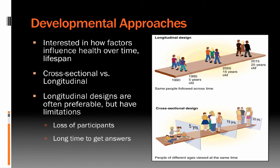Of course, longitudinal designs have limitations. You lose participants over time, and it is very hard to keep track of people over long periods, particularly lifetimes. It can also take a long time to get answers — if you're interested in how things develop from childhood through later life, you may have to wait a few generations, whereas cross-sectional designs can often provide answers more quickly.